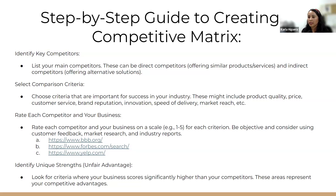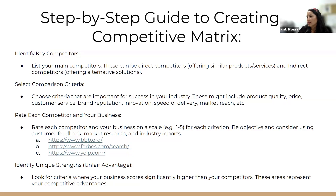I've included three links where you can get good feedback on certain businesses — you can go to the Better Business Bureau, Forbes (which has a great search engine for articles about different organizations), or Yelp. You can also use social media like TikTok comment sections and Instagram polls. Once you identify all these factors, you'll be able to find your unique strength — your unfair advantage. Look for criteria where your business scores significantly higher and also see where you're not as competitive as the businesses you chose to compare.